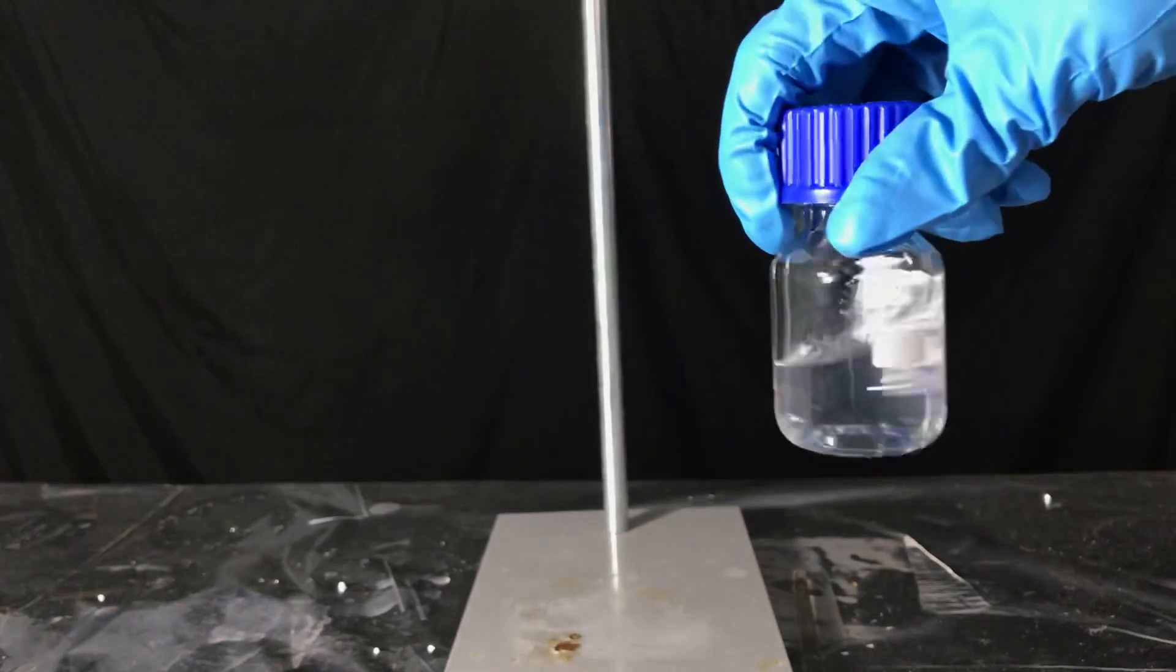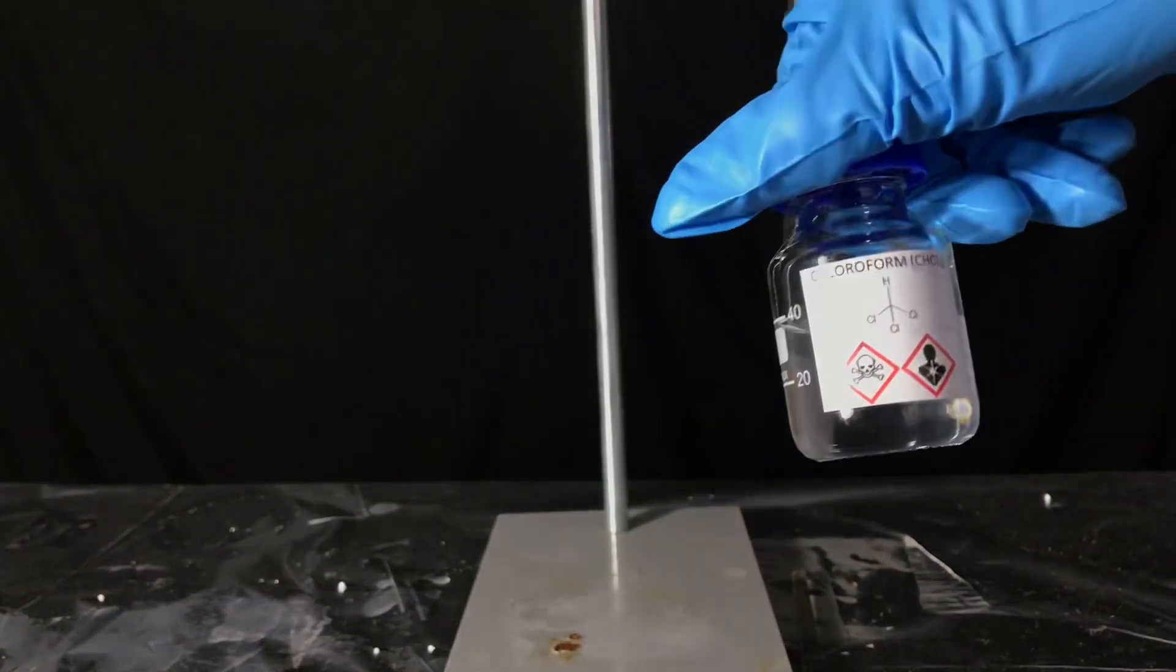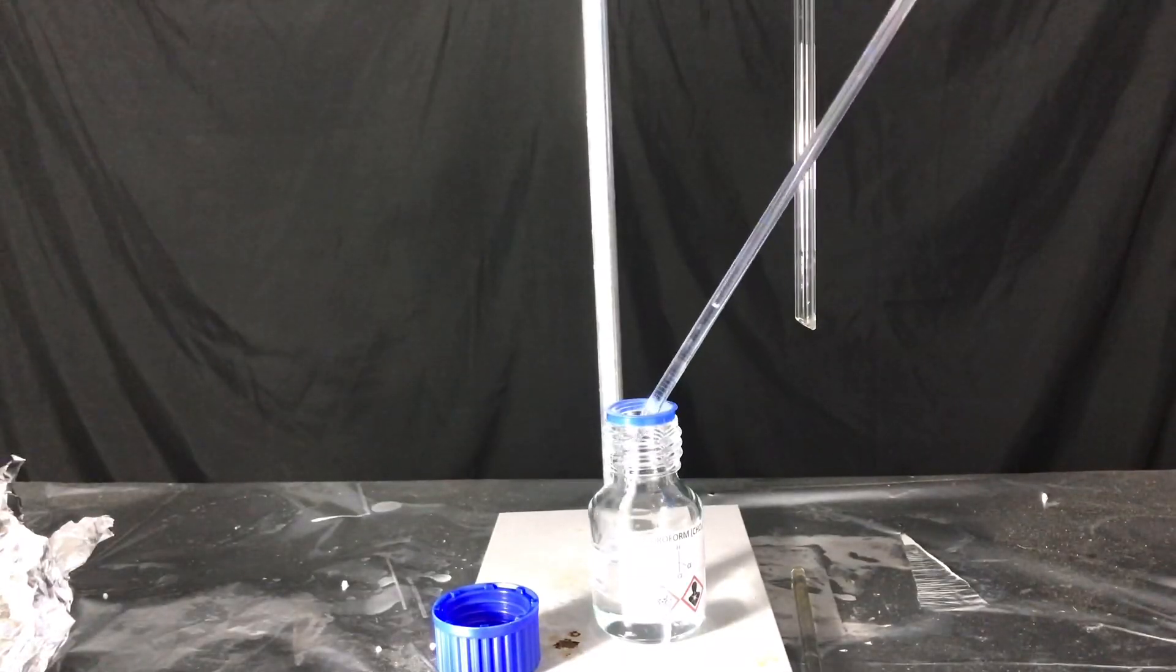And there you have it, a nice bottle of chloroform. We ended up with 39 milliliters of chloroform and this corresponds to a yield of around 66%.